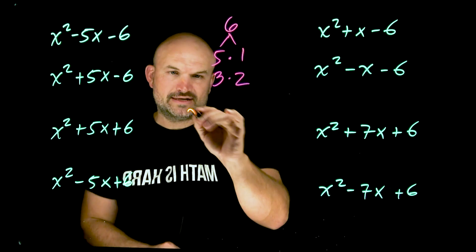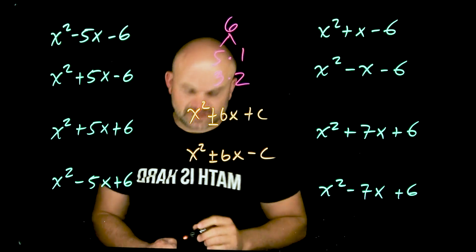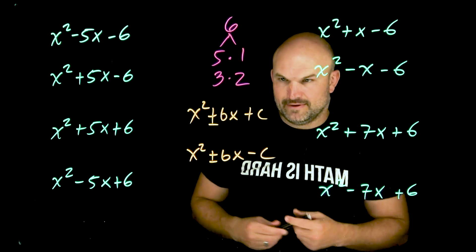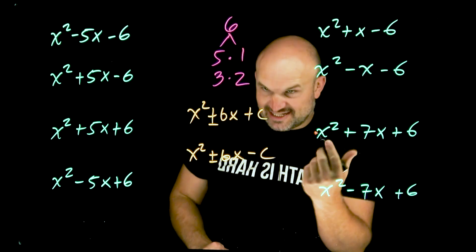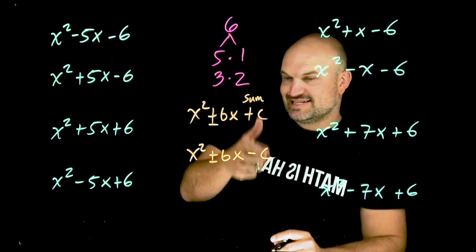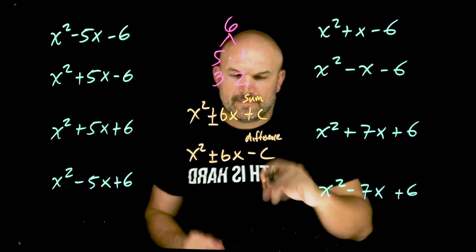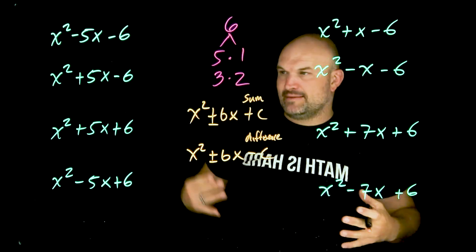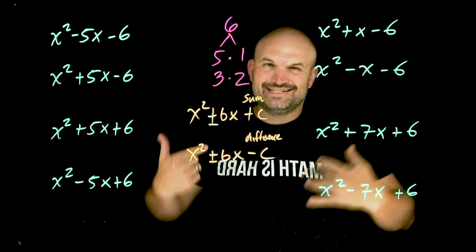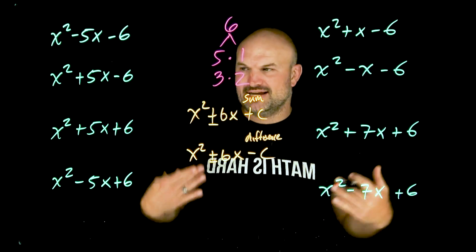There are two things I want you to understand. When we're dealing with A equal to one, there are really two different equation types to focus on. When our last number, our C, is positive, that is going to be looking for a sum. When our constant C is negative, that is going to be looking for a difference. I want you to mentally understand this, because we don't need a long drawn-out process to quickly and easily do these mentally. Typically the sum is easier for students than the difference, so let's start with that.